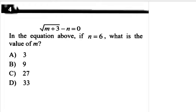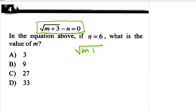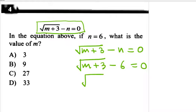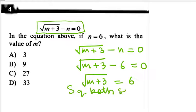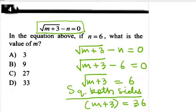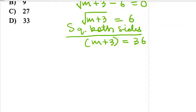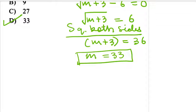Let us move on to our fourth question. It says: √(M + 3) - N = 0. Find the value of M when N = 6. Substituting N = 6: √(M + 3) - 6 = 0, so √(M + 3) = 6. Squaring both sides: M + 3 = 36, therefore M = 33. Option D is the correct answer.